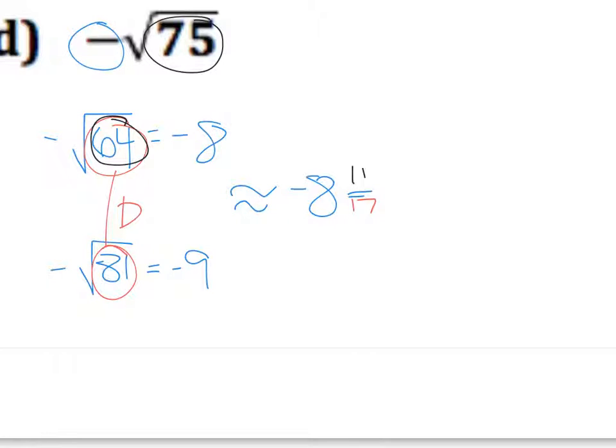To find the decimal, then, we need to do this long division. So I'll set it up. 11 divided by 17. 17 fits into 110 six times. Six times seven is 42. Carry the four. Six times one plus four is 10. When we subtract this, we get eight. Drop down the zero. 17 goes into 80.